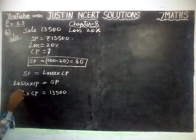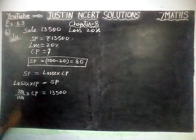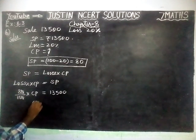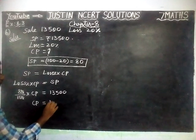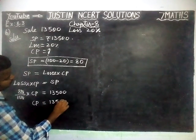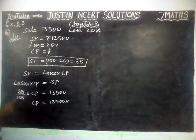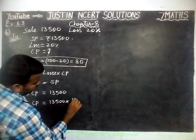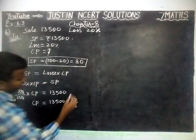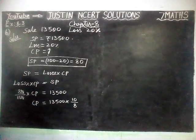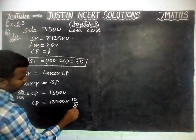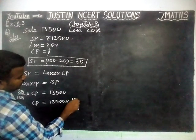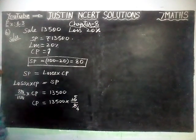Now if possible, we can simplify here — the zeros get cancelled. Taking it to the right-hand side: CP is equal to 13,500 into 10 divided by 8. When it goes to the right-hand side it becomes reciprocal, so 10 divided by 8. Now we are going to simplify by 4: 4 twos are 8, 5 twos are 10.